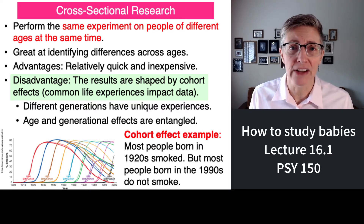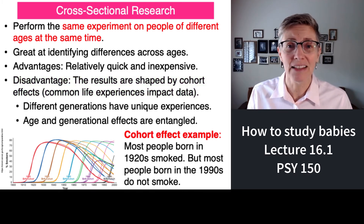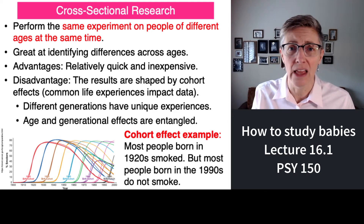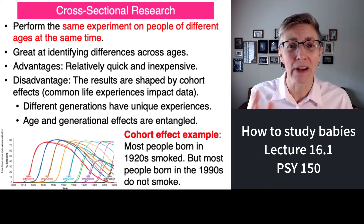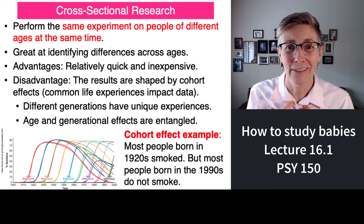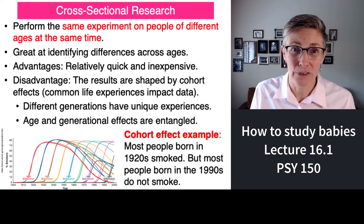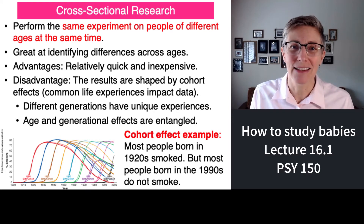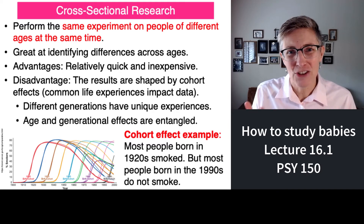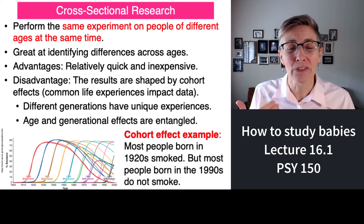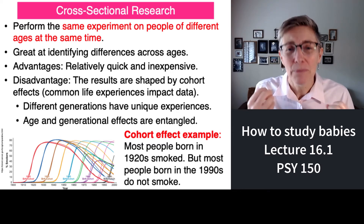It turns out people of different generations or people born at different times have different sets of experiences. For example, if I wanted to study changes in attentional processes and I studied older folks such as myself and then people in their 20s — well, 20-year-olds grew up in a very different world from the world that I grew up in. I never used a computer before I was in college because they weren't generally accessible. So your experiences in life have been very different from my experiences in life. Differences that you and I show on the same task — do they reflect age differences or do they reflect developmental processes? This is the problem with cohort effects.